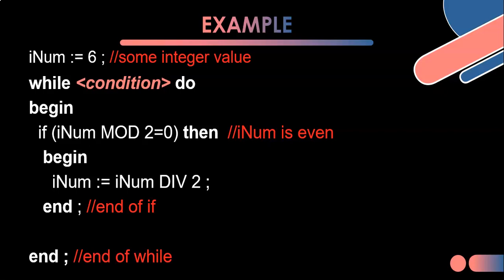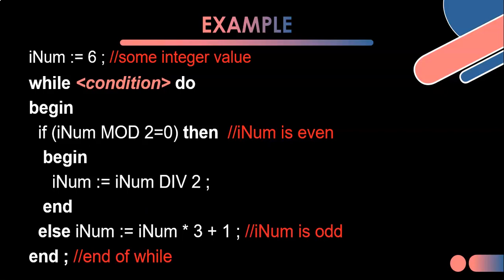So iNum div 2. So at the moment iNum is even, we divide it by 2. So if it was a 6, we would divide it by 2, it becomes a 3. Now what happens if it's odd? Well, if it's not even, else the only other option is that it's odd. And if it's odd, I don't even need to check if it's odd because if it's not even, it's odd. If it's odd, then we take that number, we multiply it by 3 and we add 1. You'll notice for both the even and the odd, we make the change and we store it back into iNum. So iNum is equal to iNum multiplied by 3 plus 1.